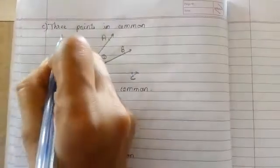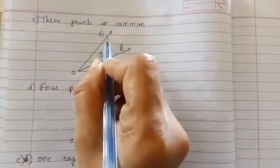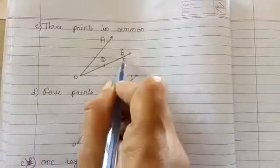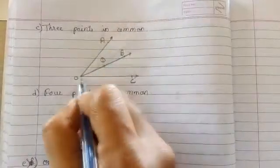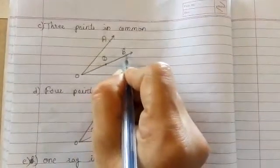Part c is three points in common. Here two angles are AOB and COD. And three points in common are point O, point D, and point B.